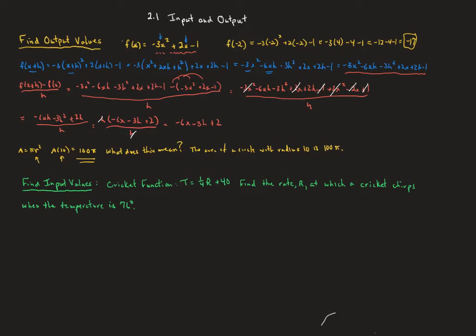Let's now talk about some input values and change directions. Here's our old cricket function, where the temperature is equal to one fourth times the rate of chirping in chirps per minute, plus 40. We want to turn this around and find r when the temperature is 76 degrees. So we plug in 76 for t, and then solve for r.